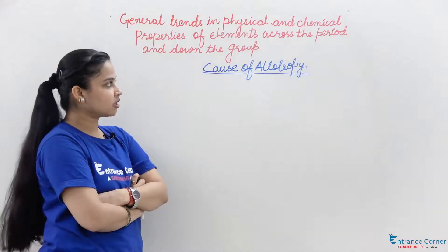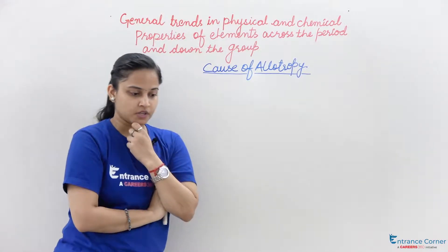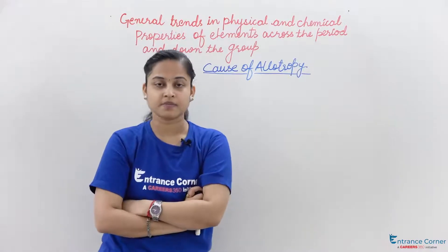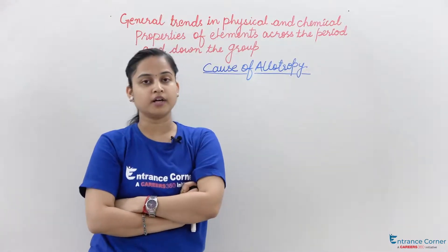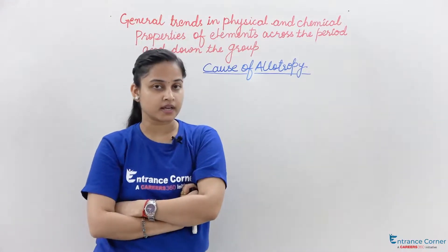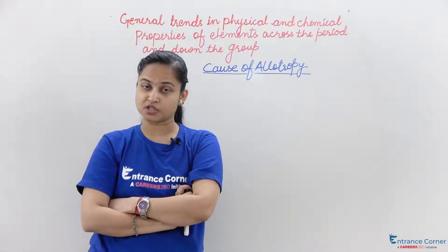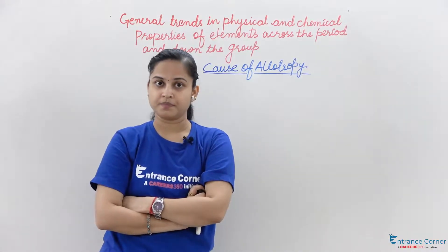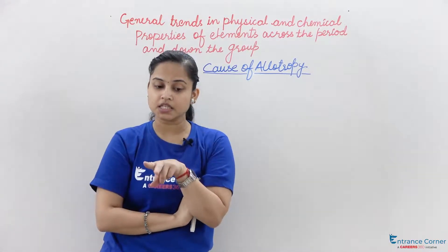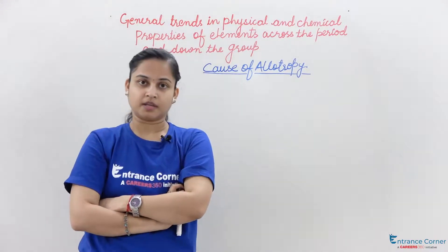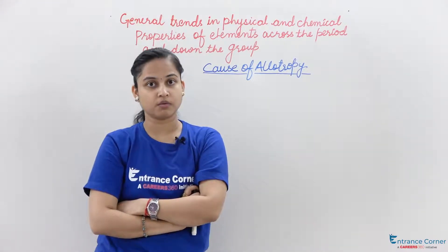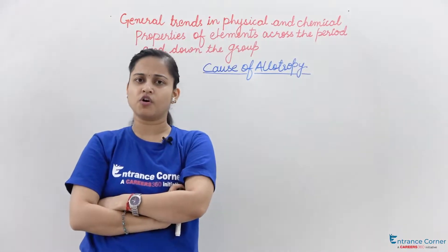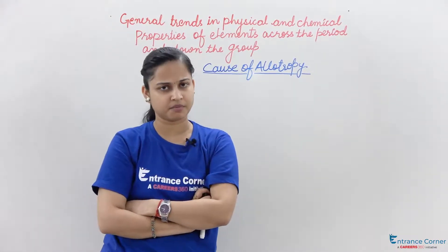If I talk about oxygen, there are two allotropes of oxygen: O2 and O3. They both can exist in solid, liquid, and gas. In these two allotropic forms, O2 and O3, what you are seeing is that there are different numbers of oxygen atoms present.